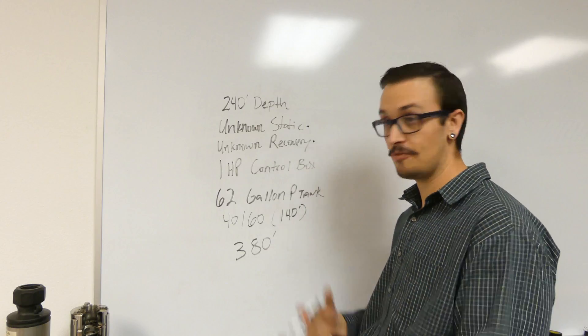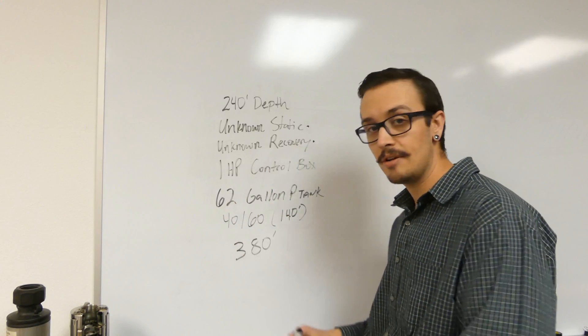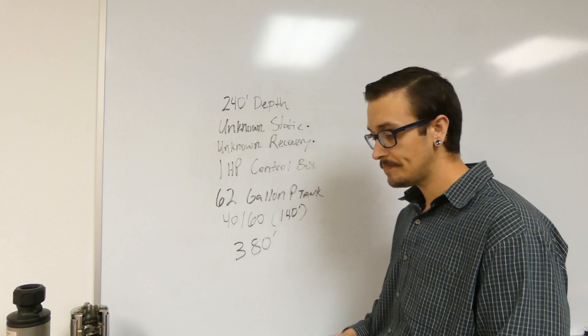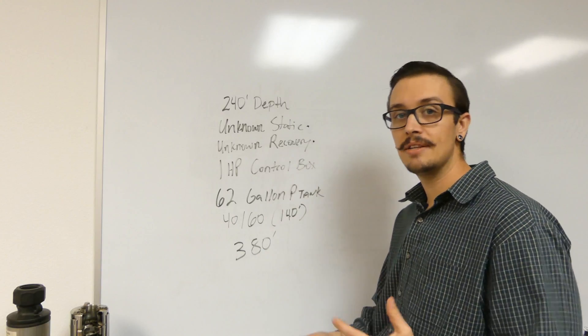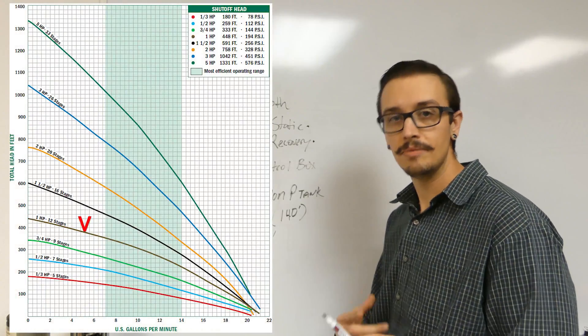We know it's one horsepower, so you might be surprised to know that we can actually figure it out from here. Since we know it's one horsepower and 380 feet TDH, we look at some pump curves and we find that the 10 gallon a minute - we're just starting in the middle - the 10 gallon a minute.